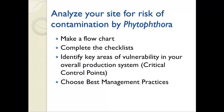The first step in this process is to analyze your nursery or greenhouse site for the risk of contamination by Phytophthora. You want to make a flow chart and complete the checklists in the manual and identify key points of vulnerability, or critical control points for contamination. Then you'll choose best management practices that address each of the critical control points.